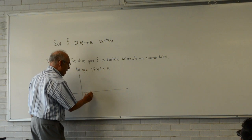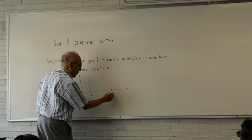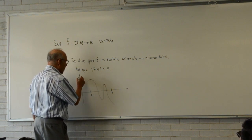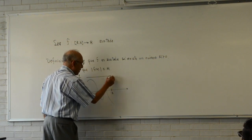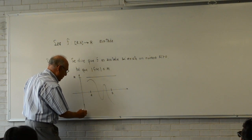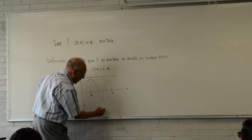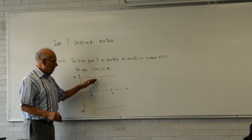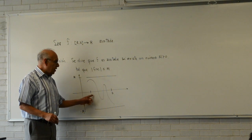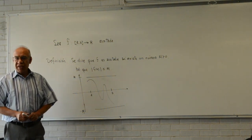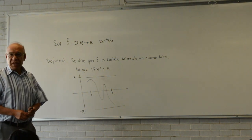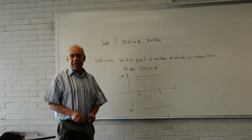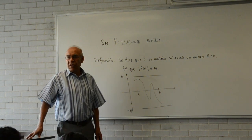Esto significa lo siguiente: si aquí tienen A y aquí tienen B, quiere decir que la gráfica está entre dos rayas. Si aquí está M y aquí estará menos M, quiere decir que la gráfica no rebasa estas dos rayas. Cuando se tenga esta situación, vamos a decir que la función es acotada en el intervalo cerrado AB. Es importantísimo entender lo que es una función acotada; será nuestro marco de referencia. En lo sucesivo, prácticamente el 90% del curso trataré con funciones acotadas.